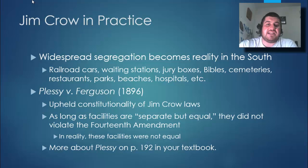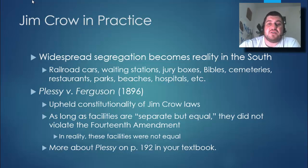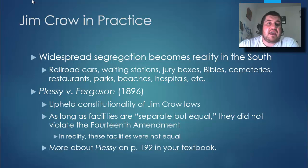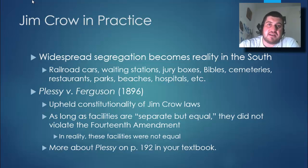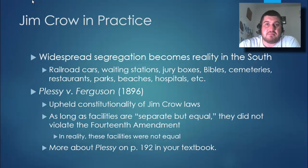This issue comes to a forefront in 1896 with the very important case of Plessy v. Ferguson — you're going to have to know this case. It upholds the constitutionality of Jim Crow laws. A man named Plessy got on a train in Louisiana, which had segregated train cars. Plessy looked white — he was 75% white but one-quarter black, which under the law made him black. He looked white, so they let him on the car. He bought a ticket and sat down.